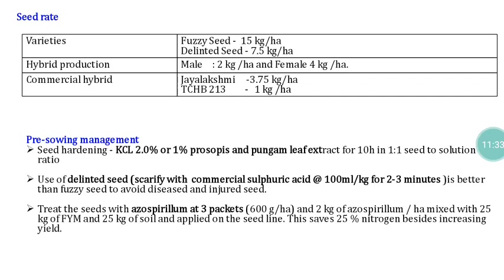For delinted seed material, we need only 1.5 kg per hectare for hybrid seed production. For the male parental line, 2 kg per hectare is needed; for the female parental line, 2 kg per hectare. For F1 hybrid commercial production, 3.75 kg per hectare is used; for Varalaxmi and TCHP 213, 1 kg per hectare. Seeds to be sown must be given appropriate treatment, with acid delinting being a very important treatment for fuzzy seeds.